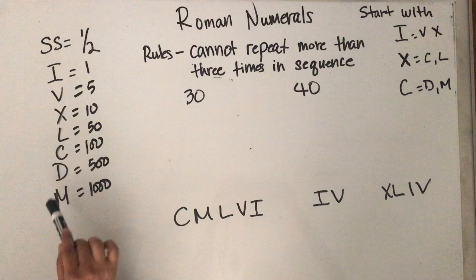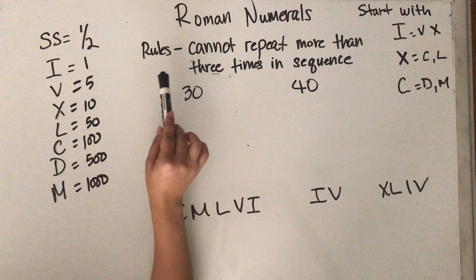There are rules when you're doing Roman numerals. When you're calculating Roman numerals, you cannot repeat more than three times in sequence.